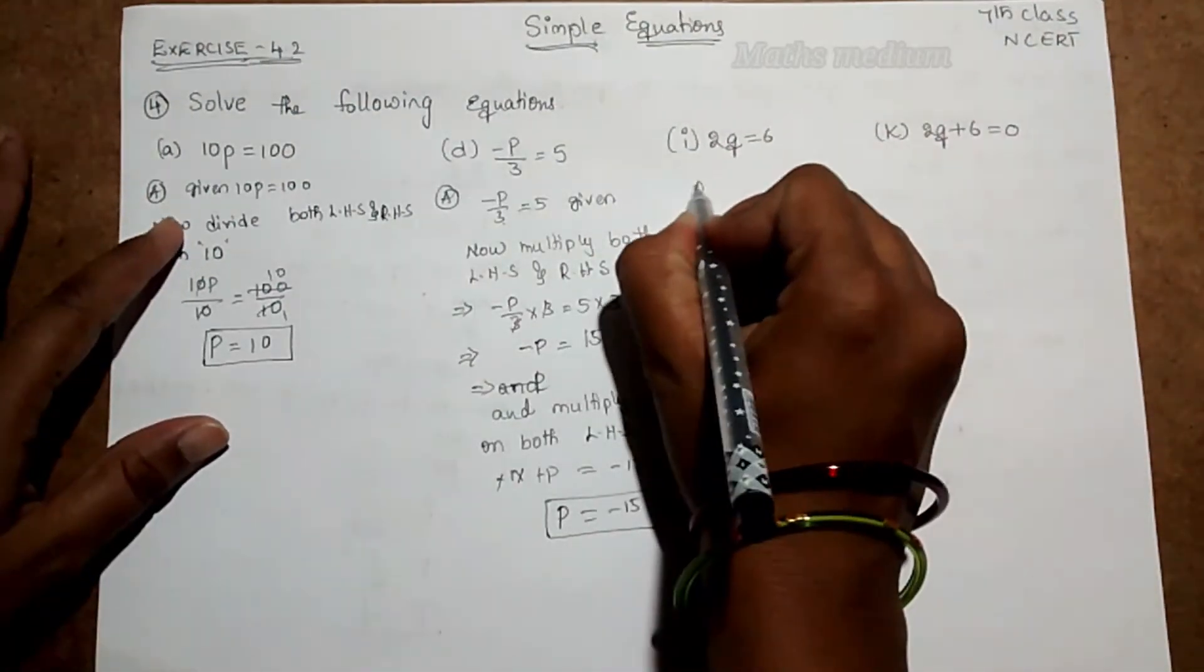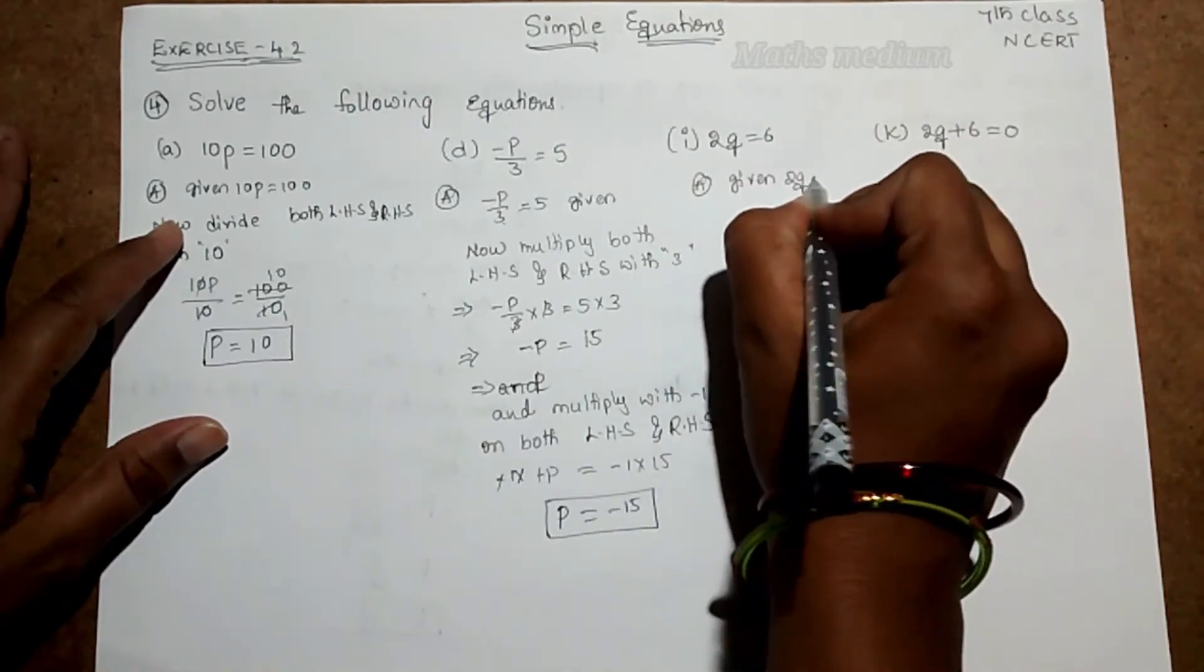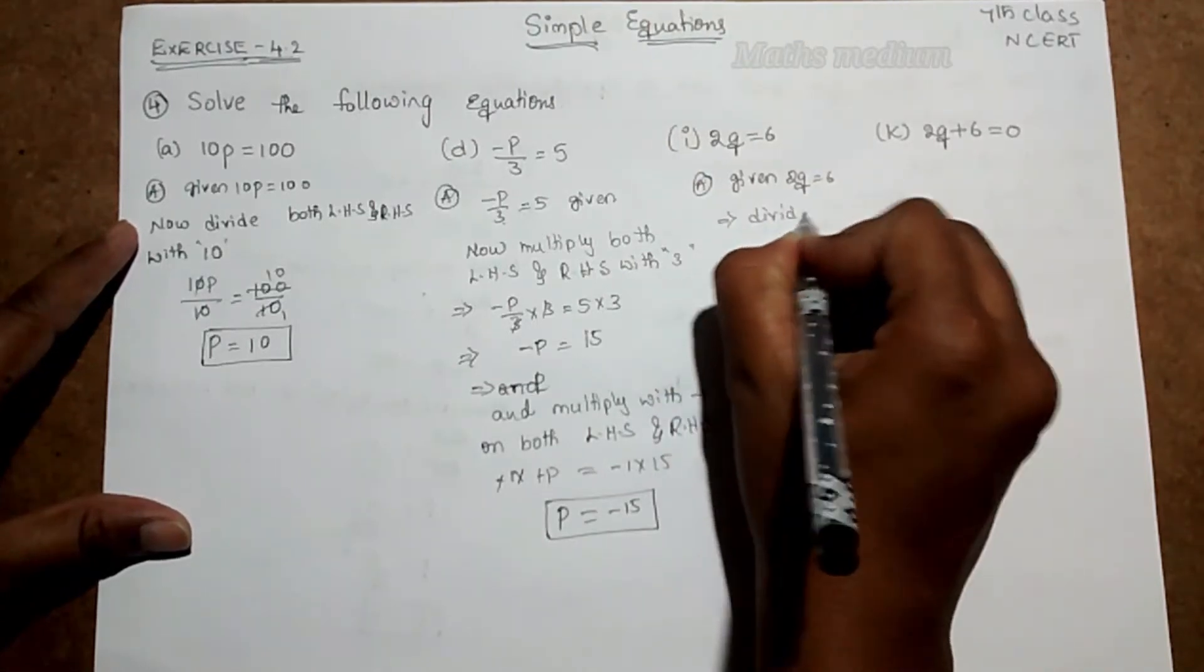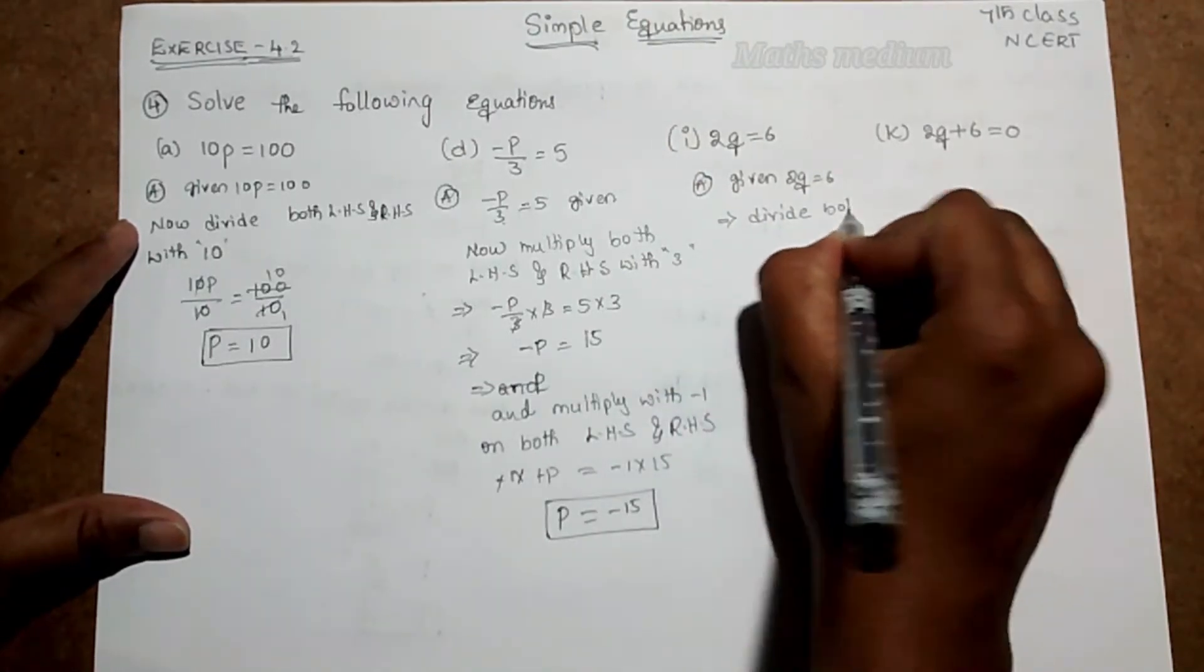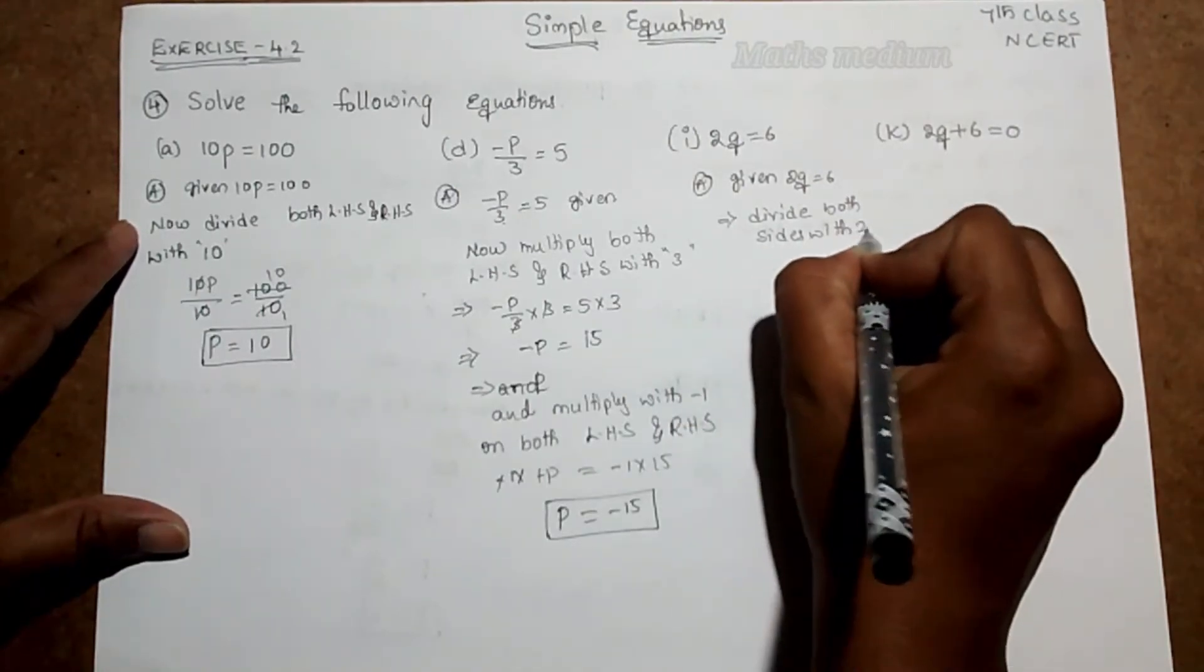Next, similarly here, given 2q is equal to 6. So now here we're multiplying, so we have to divide. Divide both sides with 2.